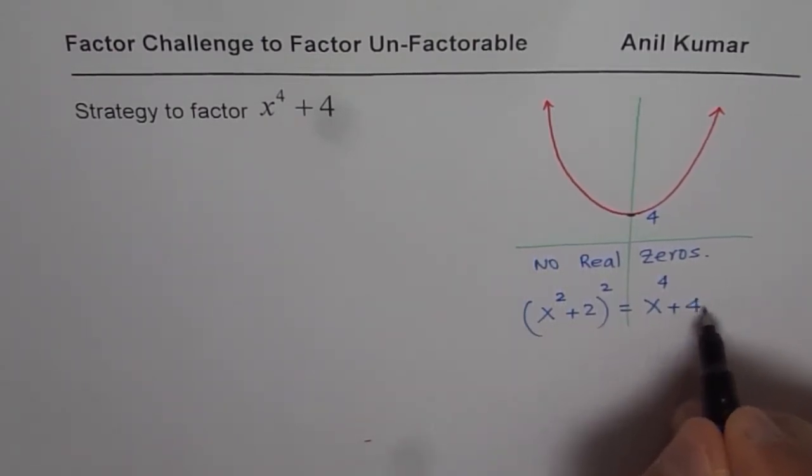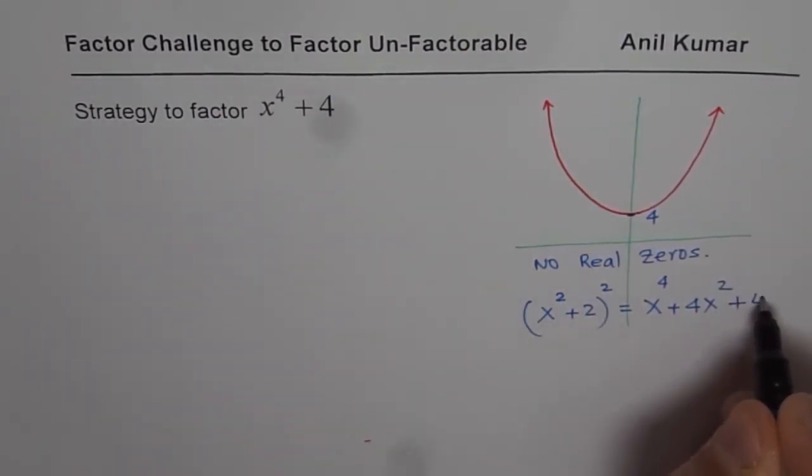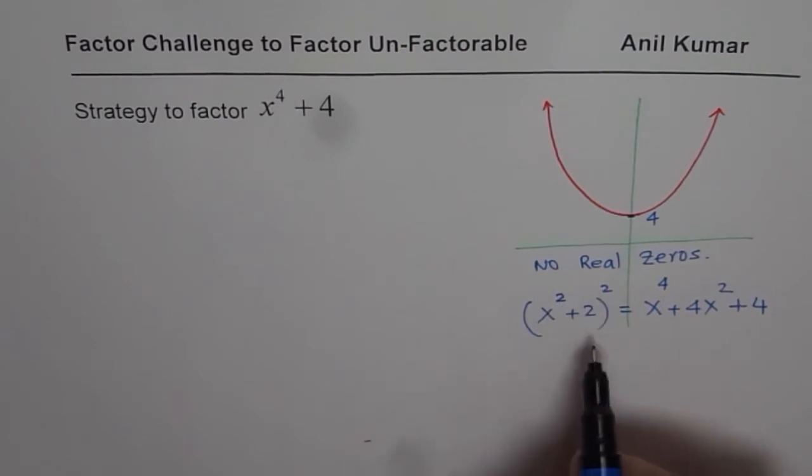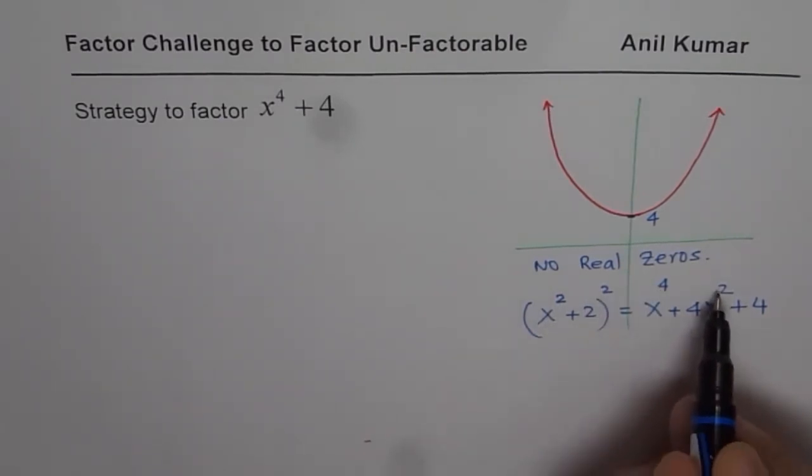that means 4x square plus 2 square, which is 4. So we could write x square plus 2 whole square as x to the power of 4 plus 4x square plus 4.